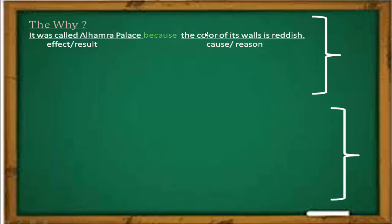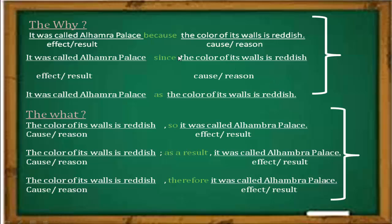It was called Alhambra Palace. Why? Because the color of its walls is reddish — that is the cause. After 'because' you will get the cause. The same sentence can also use 'since': it was called Alhambra Palace since the color of its walls is reddish. Or using 'as': it was called Alhambra Palace as the color of its walls is reddish. Only the linking word changes, not the meaning.